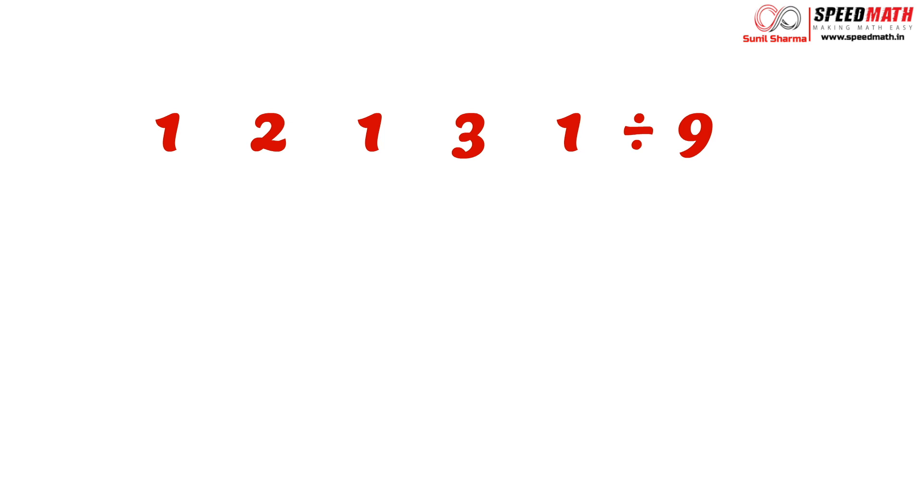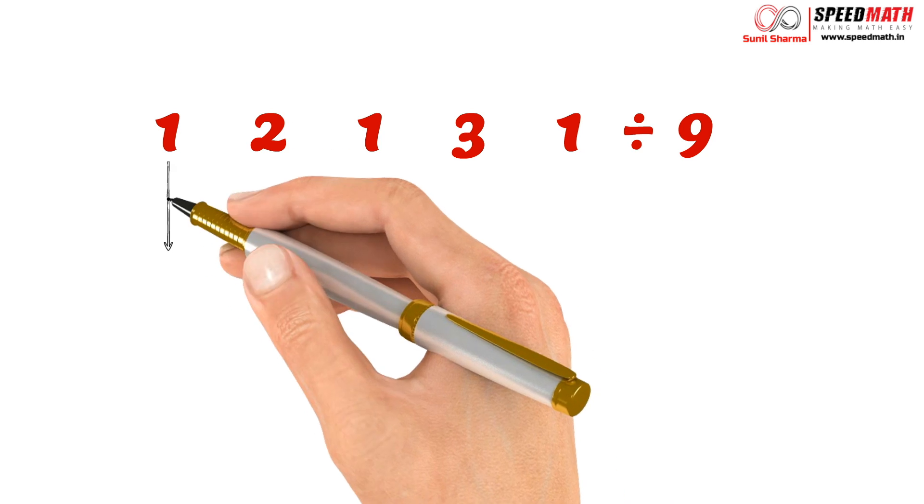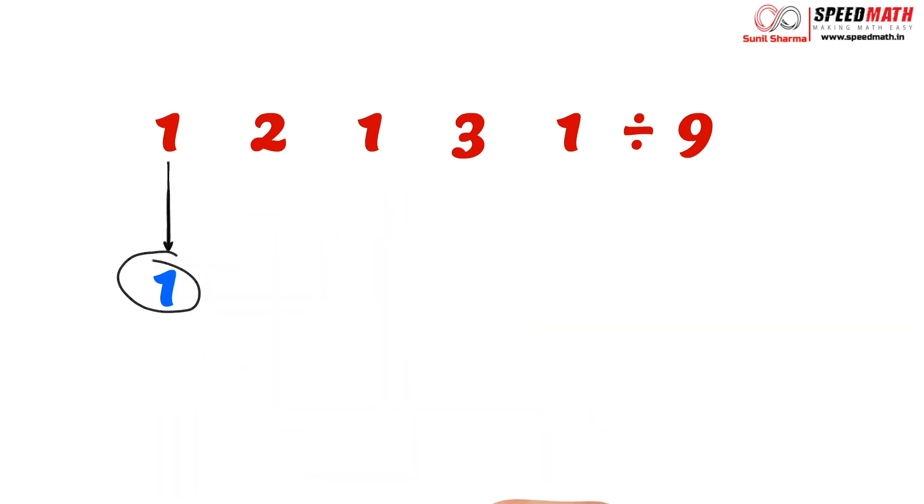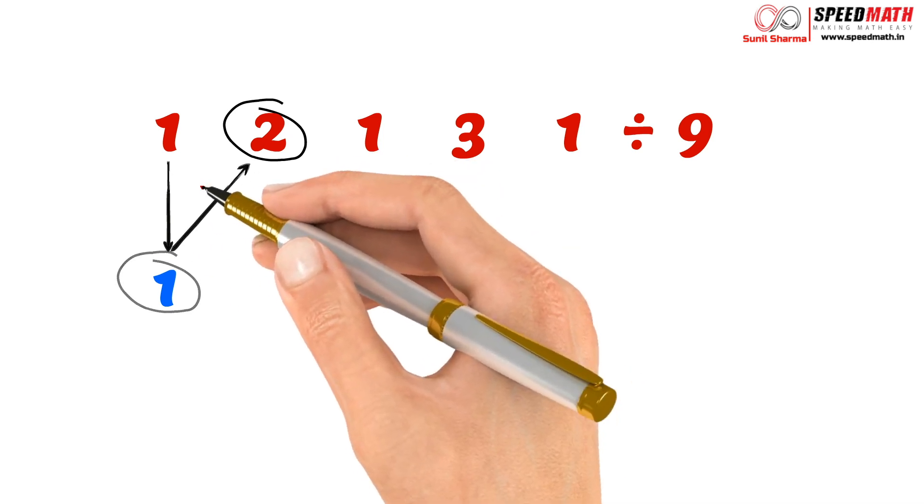Step 1: Take the first digit as it is. So here the first digit is 1, so we are going to write it as it is. Step 2: Add this digit to the very next one. So the next digit is 2, so we are going to add these two diagonally.